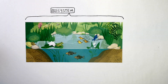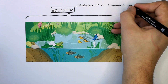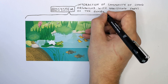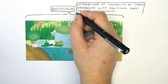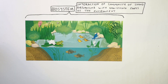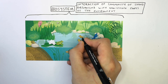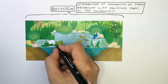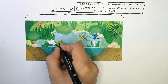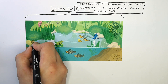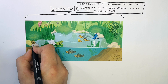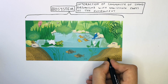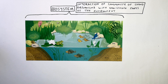The ecosystem is an interaction of the community of living organisms with non-living parts of the environment. The ducks, the fish, the frogs, the dragonflies, the snail, and all the plants, grass, and aquatic vegetation are the living parts of the ecosystem. And the rocks, the soil, the water, and the air are all the non-living parts of the ecosystem.